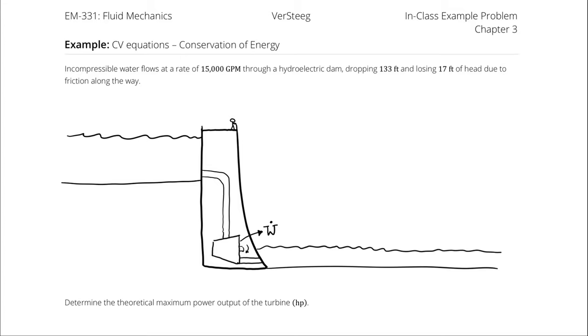Incompressible water flows at a rate of 15,000 gallons per minute through a hydroelectric dam, dropping 133 feet and losing 17 feet of head due to friction along the way. Determine the theoretical maximum power output of the turbine.